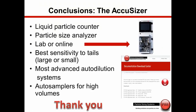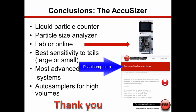The AccuSizer Single Particle Optical Sizing System is both a liquid particle counter and a particle size analyzer, usable in the laboratory or online. It is the best system for finding the tails of distributions outside the main population and is the highest sensitivity system for detecting a few large particles — which can cause process or product quality problems in many applications. With advanced auto-dilution systems, it works from very low to very high concentrations, with options for single measurements or full automation using the autosampler. For additional information, visit the website and use the Documentation Download Center.